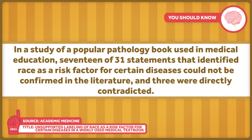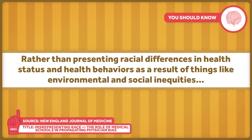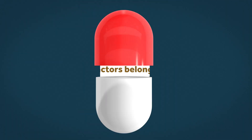In a study of a popular pathology book used in medical education, 17 of 31 statements that identified race as a risk factor for certain diseases could not be confirmed in the literature, and three were directly contradicted. Rather than presenting racial differences in health status and health behaviors as a result of things like environmental and social inequities, these differences are presented as being based on innate biological factors belonging to every person assigned to a racial group.